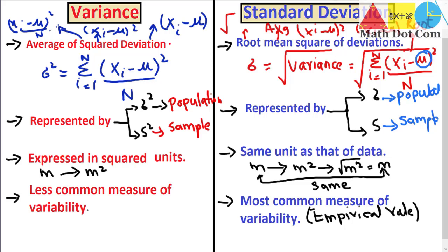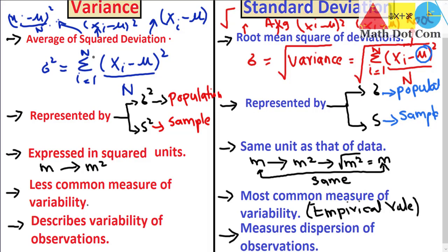Another difference: variance describes the variability of individual observations — it looks at each observation in the data set and checks how they vary from the mean and from each other. Standard deviation looks at a set of values in a data set that fall near or away from the mean by using the empirical rule. That's all from today's lecture.